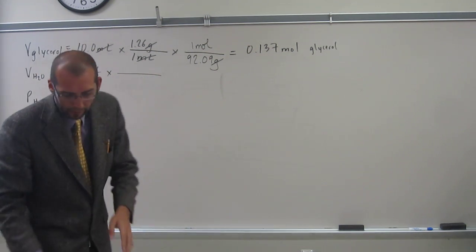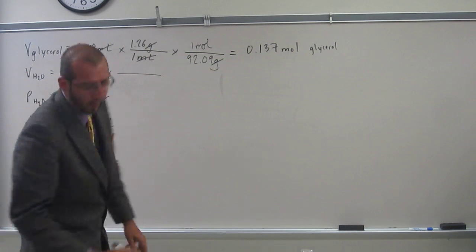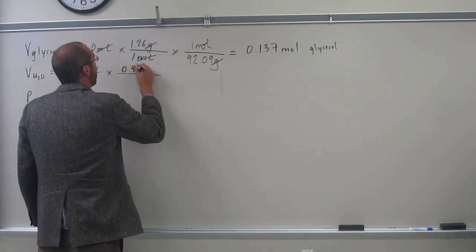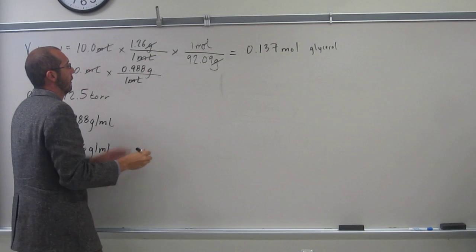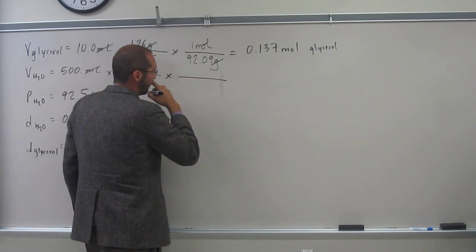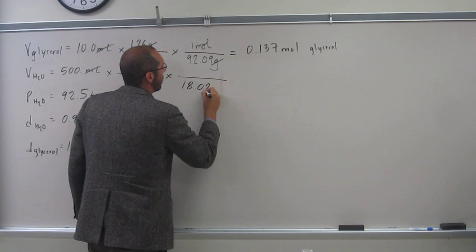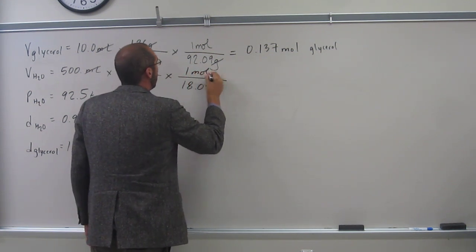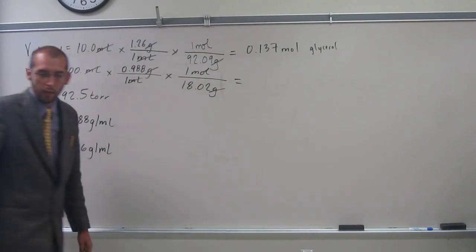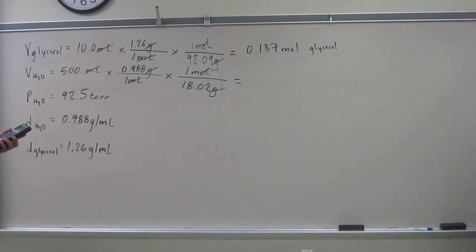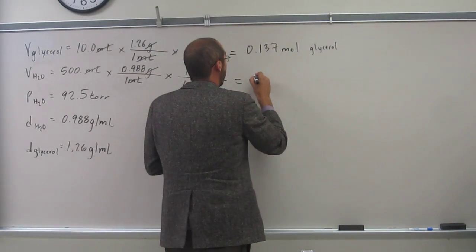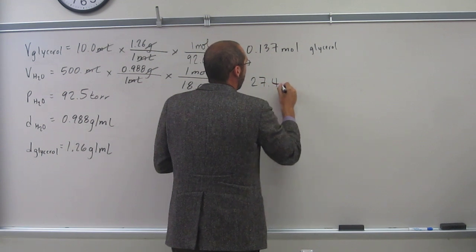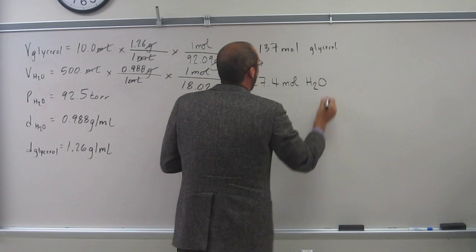For water, the density at that temperature was 0.988 grams per 1 mil, and the molar mass is 18.02 grams per 1 mol. So, to 3 sig figs, 27.4 mol water.